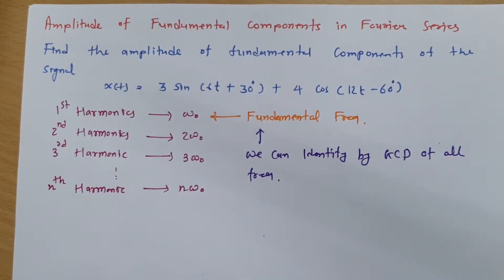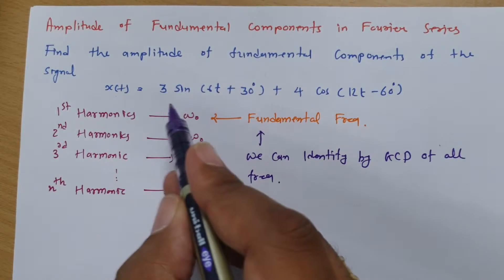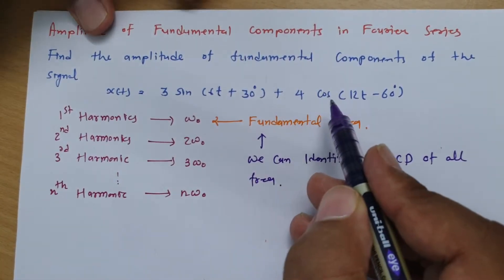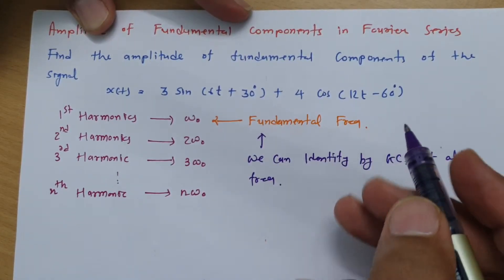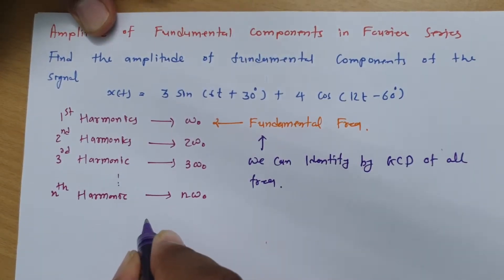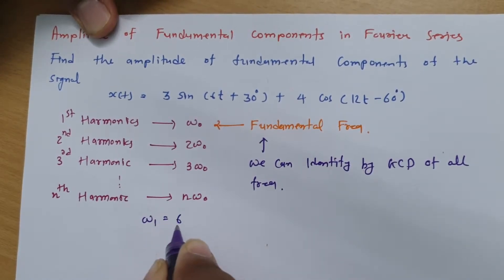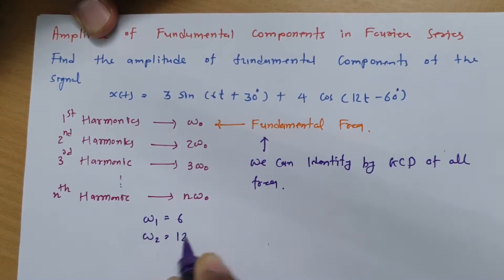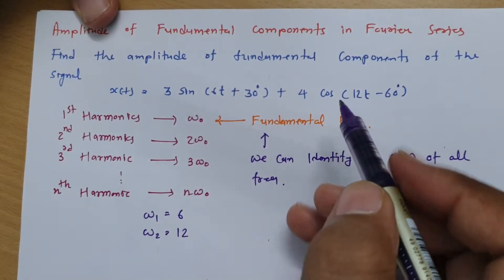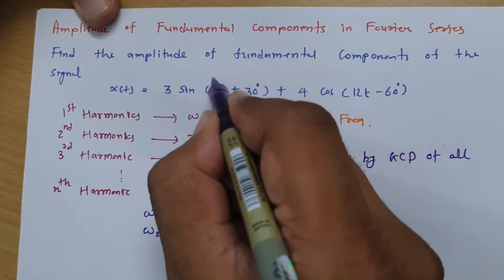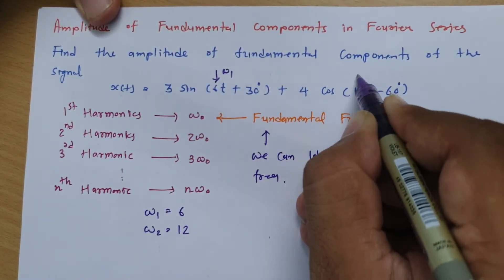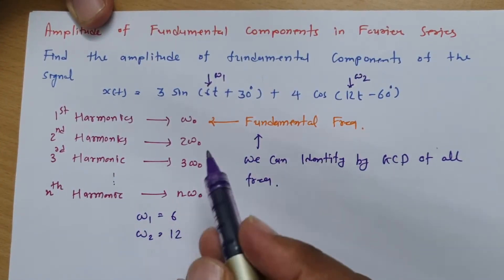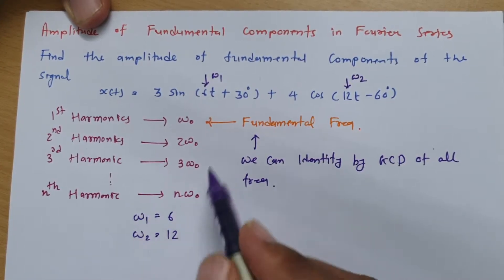So here we have a question. And that question is x(t) = 3sin(6t + 30°) + 4cos(12t - 60°). So here we have, if I say omega_1, so that is 6. And if I say omega_2, so that is 12. We don't need to see phase of it, right? So omega_1 that is this. And omega_2 that is this, 12.